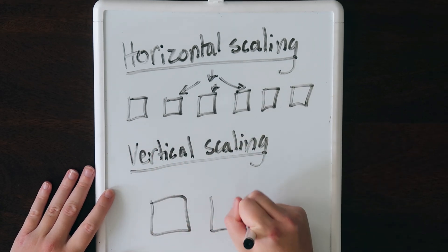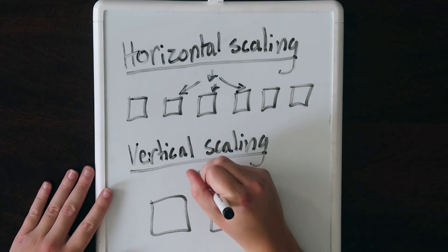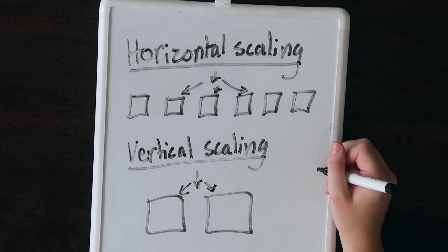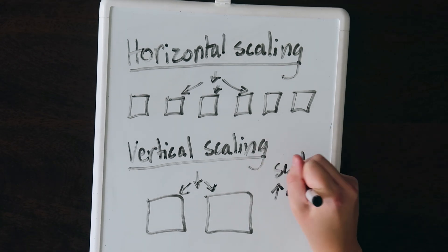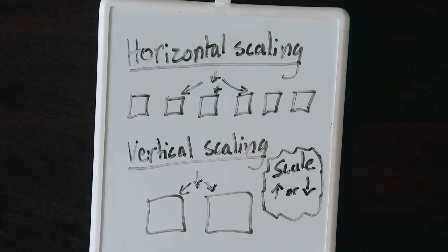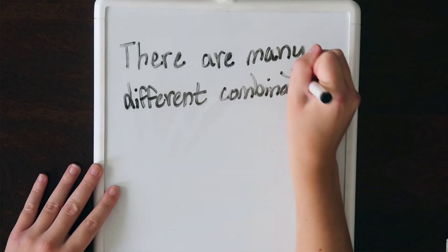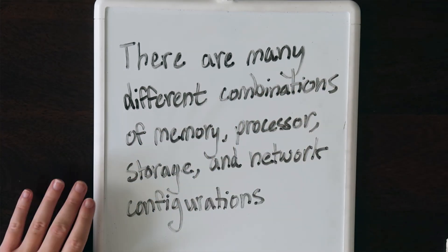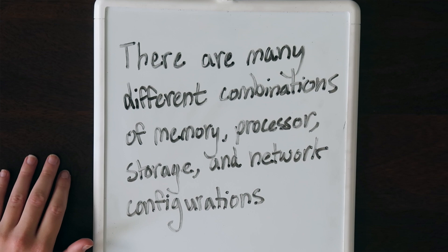There's also vertical scaling. Instead of adding more computers, we make each computer more powerful with a better CPU or increased storage. You can also scale down, making each computer less powerful with a slower CPU or less storage. Picking the right type of computer to run your application is tricky because there are so many combinations of memory, processor, storage, and network configurations, and what's best can change over time.